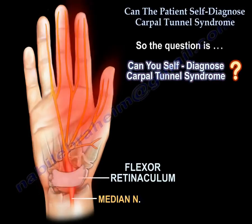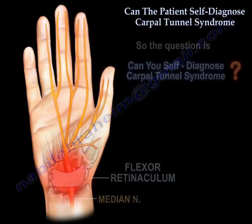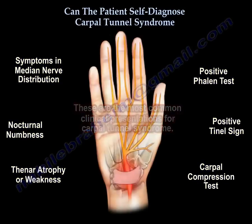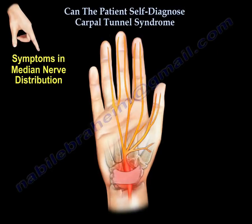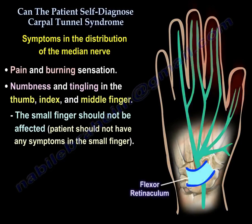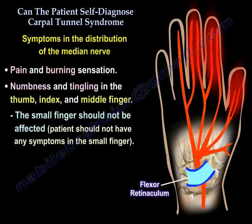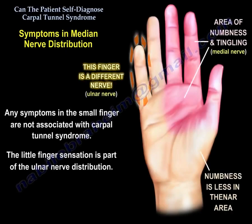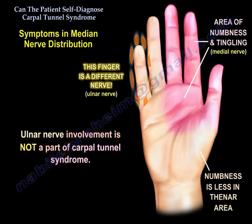Can the patient self-diagnose Carpal Tunnel Syndrome? These are the most common clinical presentations. Symptoms occur in the distribution of the median nerve — pain and burning sensation, numbness and tingling in the thumb, index, and middle finger. The small finger should not be affected; any symptoms in the small finger are not associated with Carpal Tunnel Syndrome, as the little finger sensation is part of the ulnar nerve distribution.